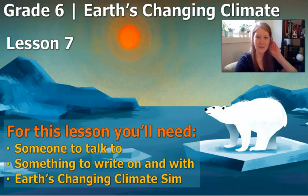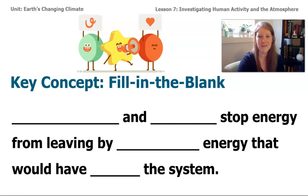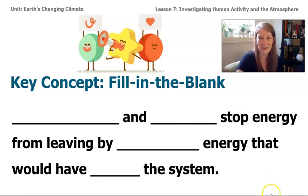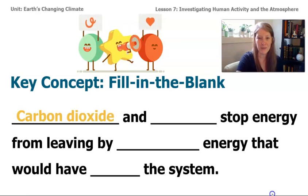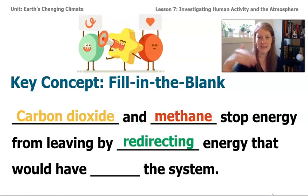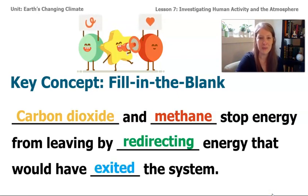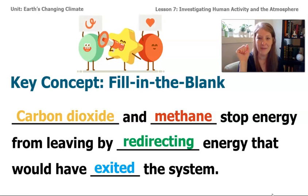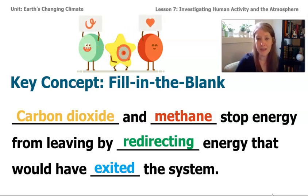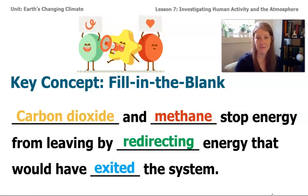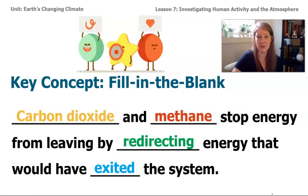Let's get started by reviewing what we ended lesson 6 with. At the end of lesson 6, we had this new key concept that we were really excited about — we had discovered that carbon dioxide and methane actually stop energy from leaving Earth's system by redirecting energy that would have exited the system. We explored the sim and clicked on a little energy arrow and discovered that molecules of carbon dioxide and methane interact with the energy that's trying to exit Earth's system, and they redirect it.